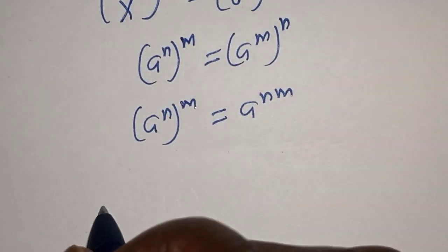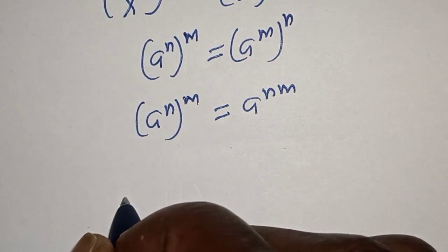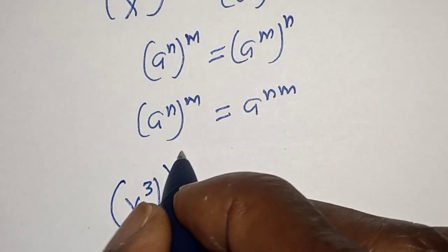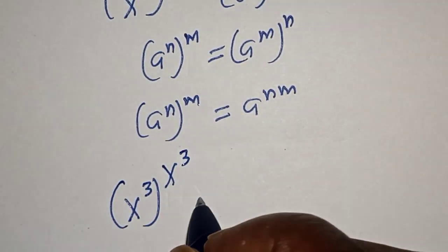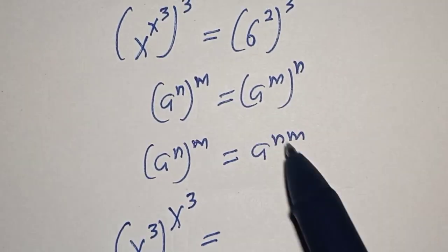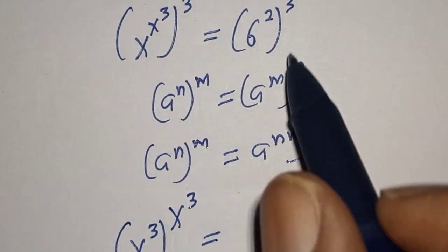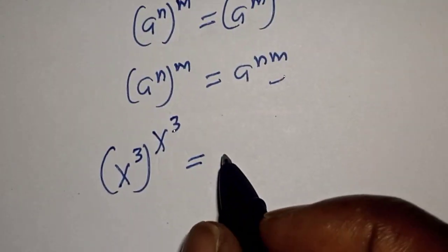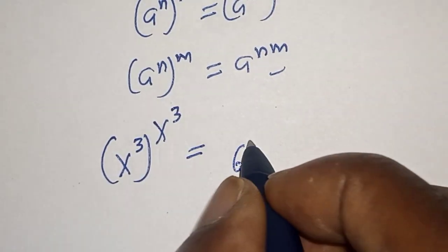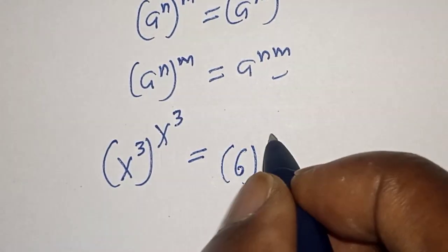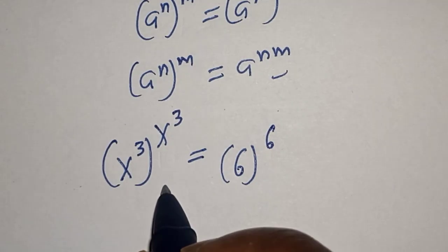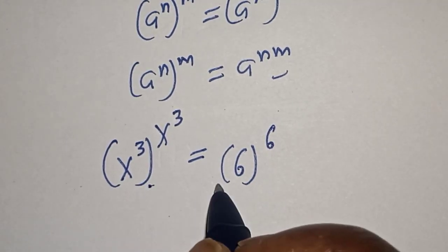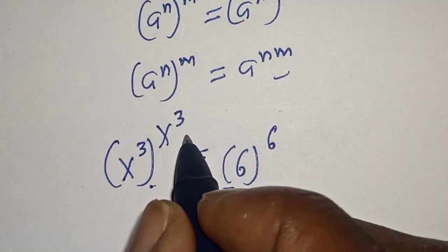From this rule, we have s raised to power 3, raised to power s raised to power 3, is equal to 6 raised to power 2 times 3, that is 6 raised to power 6. Now if you compare this very well, this one is equal to this, and this is equal to this.